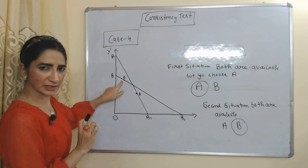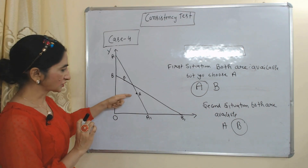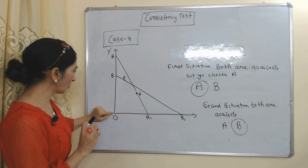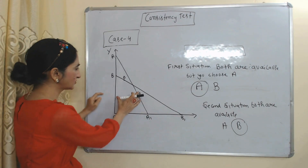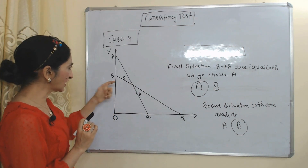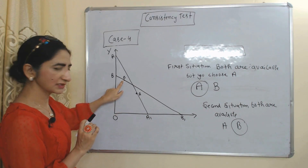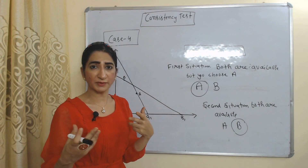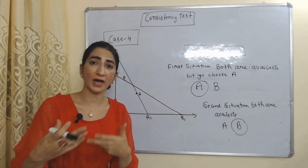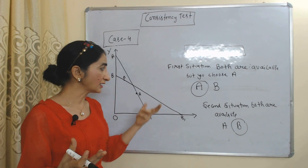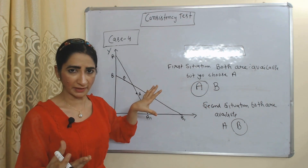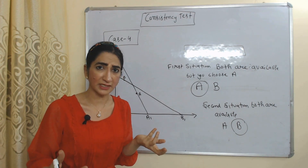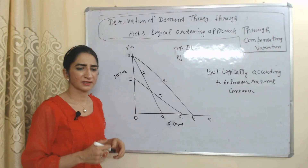In case four, in the first situation — triangle OA-A1 — both options A and B are available, and the consumer chooses A and rejects B. In the second situation — triangle OB-B1 — again both options A and B are available, but this time the consumer chooses B and rejects A. This behavior is not showing consistency because the consumer is changing behavior — earlier chose A when both were available, now choosing B when both are again available. This behavior fails the consistency test.